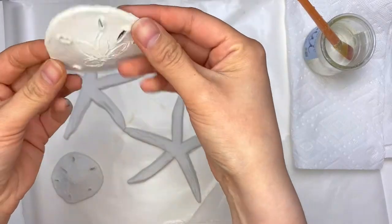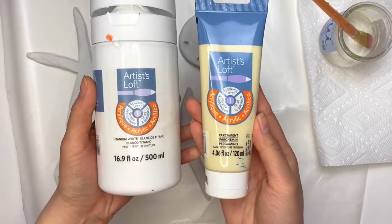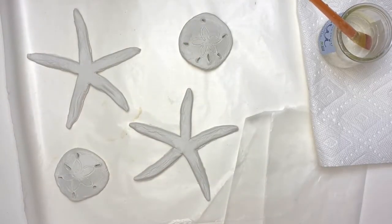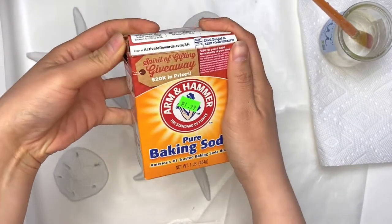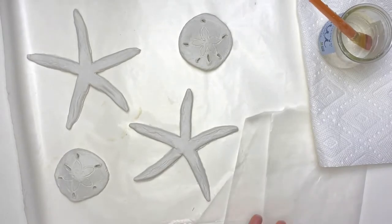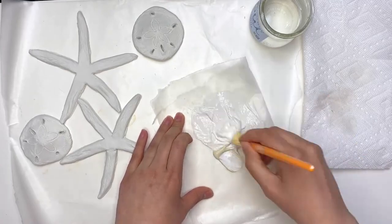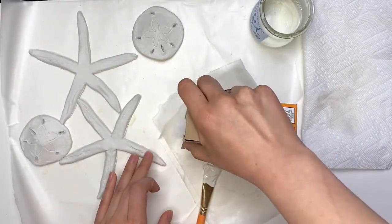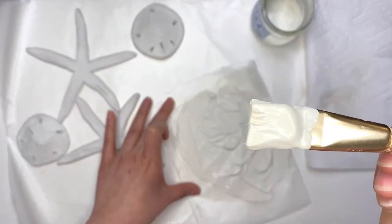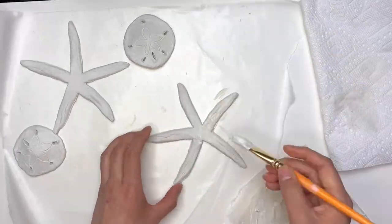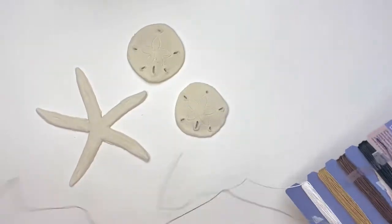So once everything is nice and dry, you can go ahead and paint it. I'm using some white and some parchment color acrylic paint, which is sort of like a beige color, and I sprinkled some baking soda on top of it to make it really thick and look a little bit sandy. Give your pieces two coats of baking soda paint and then let them dry.